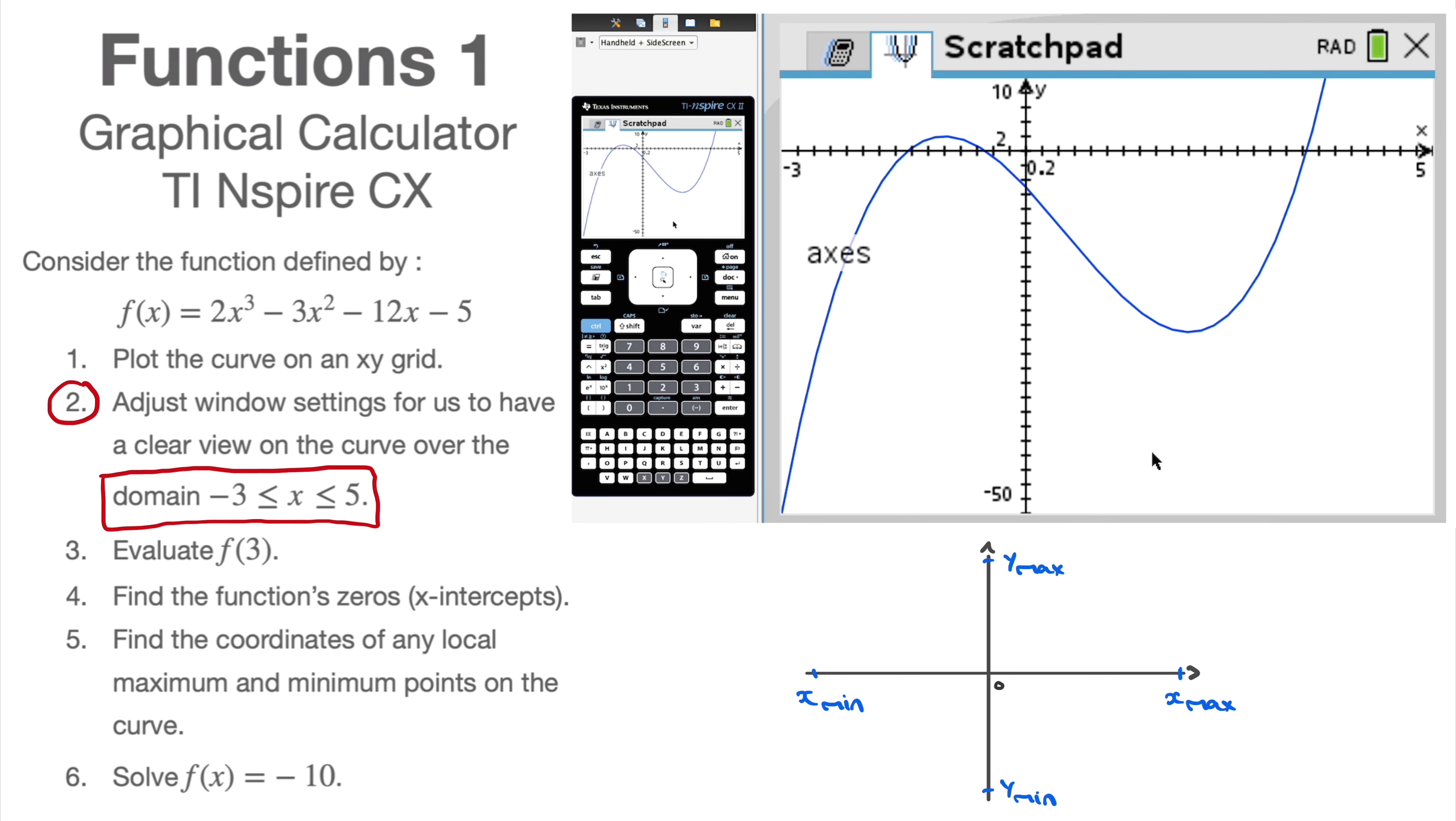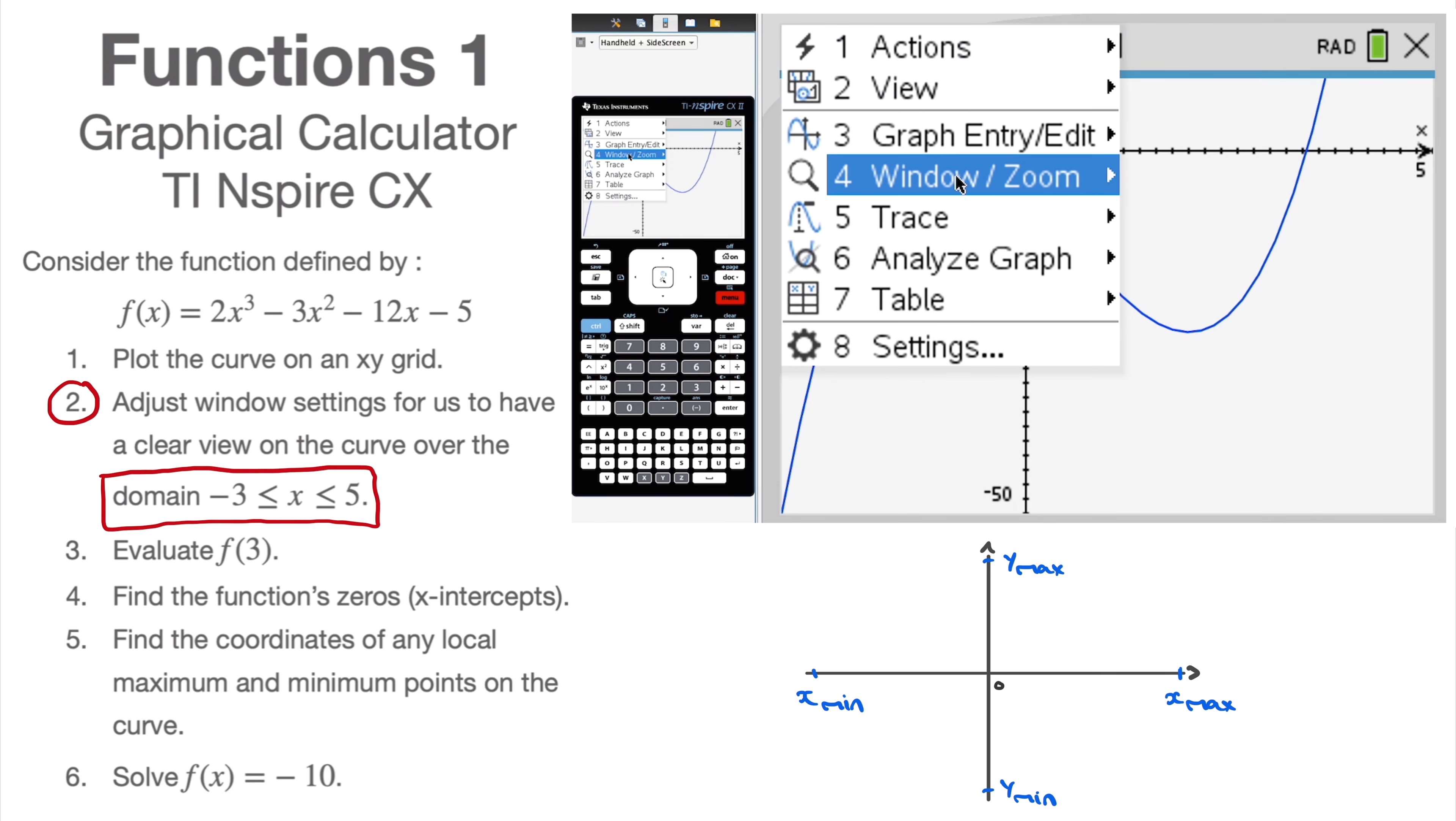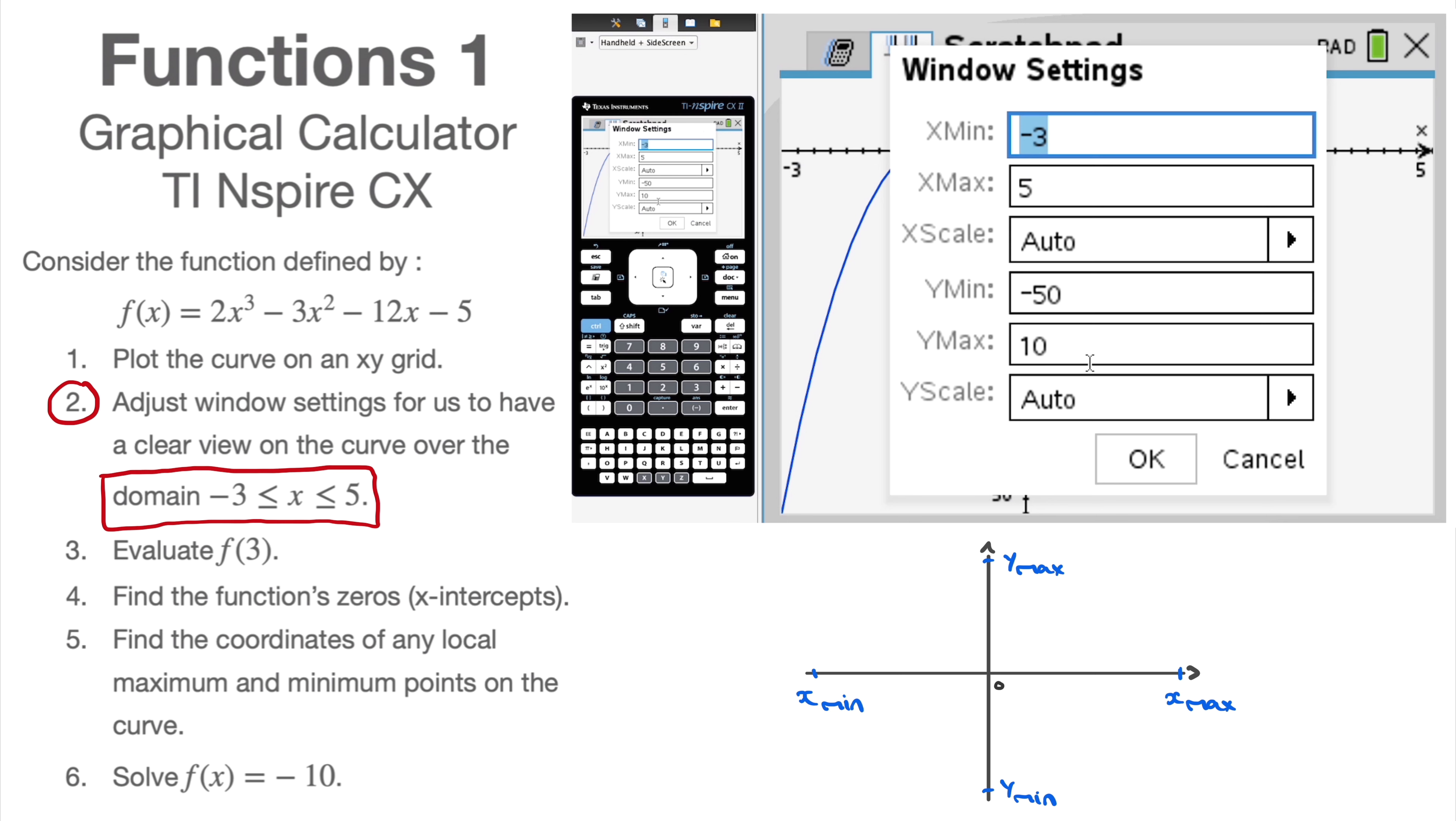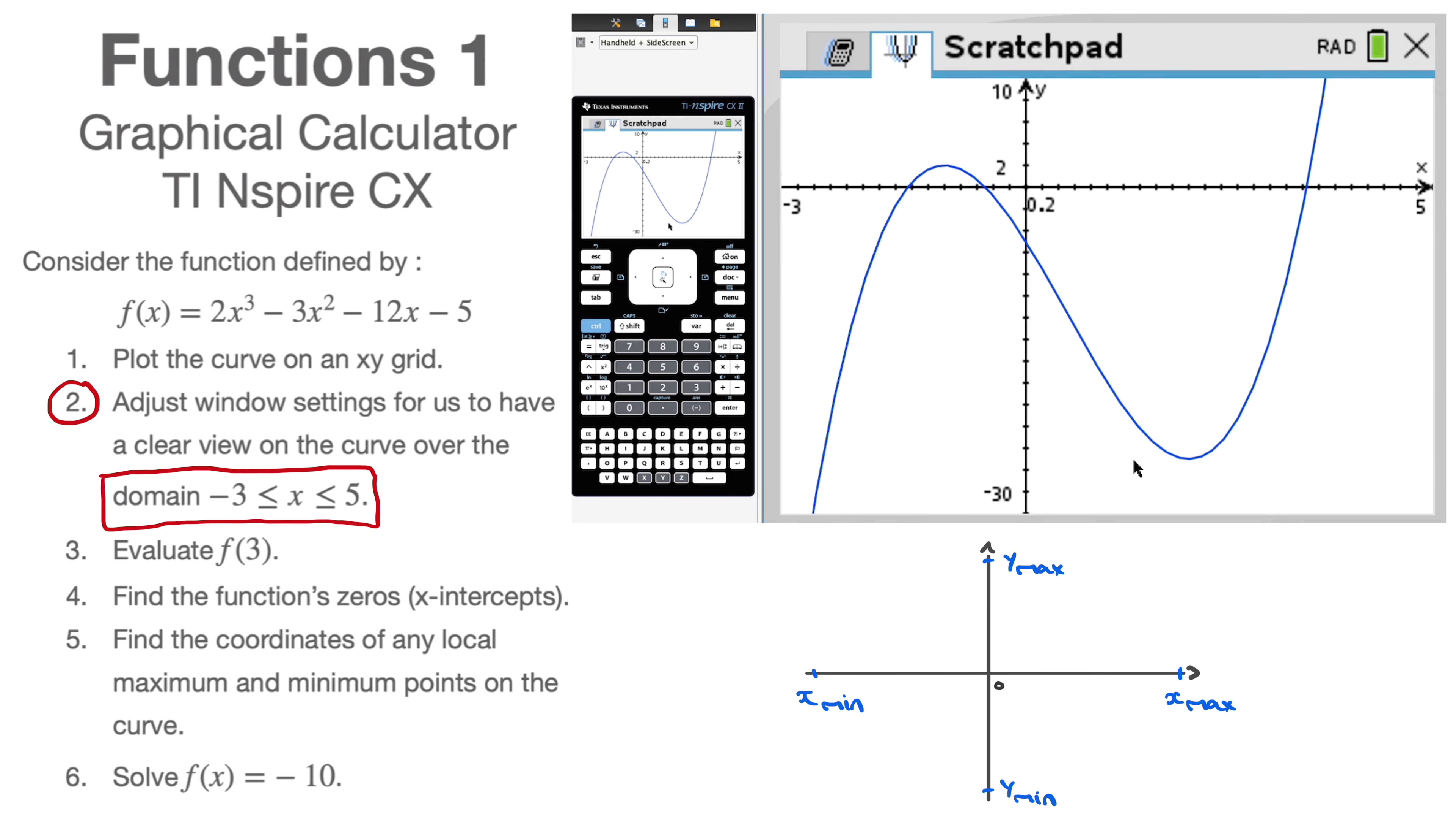That's already looking much better now. So I'm quite happy with that, but just looking at it, I still have a lot of wasted space down here. Now, let me insist, if you're in a test or an exam, you could stop there. You've got everything you need on the screen. But for the sake of showing you things clearly right now, I mean, just looking at this, I'd say that's roughly, I don't know, I reckon if I go to -30, it should be enough. I don't need to go all the way down to -50. So I'll go there one last time. I click on menu, window/zoom, window settings, and I'll change my minimum y value to -30. Click on that, and I click on OK. And that's looking pretty good to me. So at present, we've answered question two. We've adjusted the window settings for us to have a clear view on the curve over the domain, x between -3 and 5.